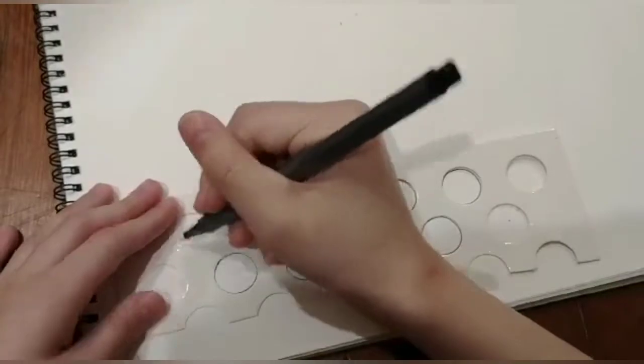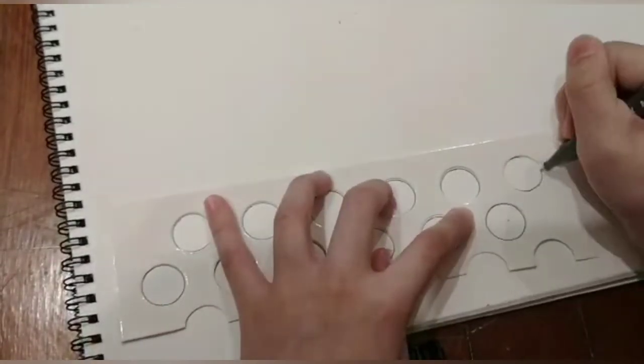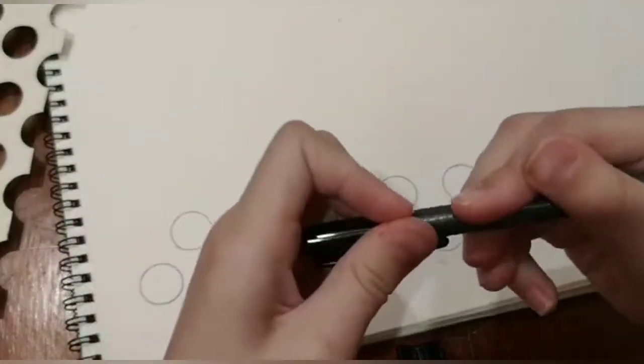So just draw the circle with a black little pen. You can use any pens that you desire and any color that you want. So after tracing it, you can go ahead and design however you want.